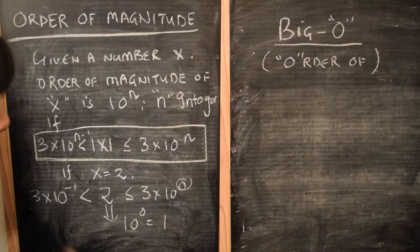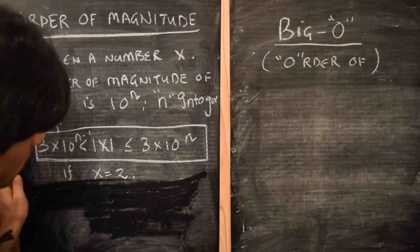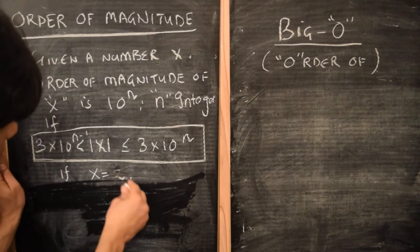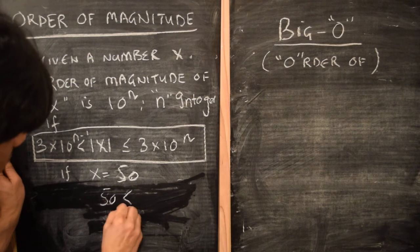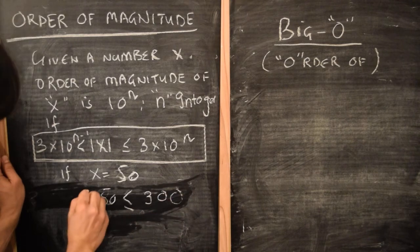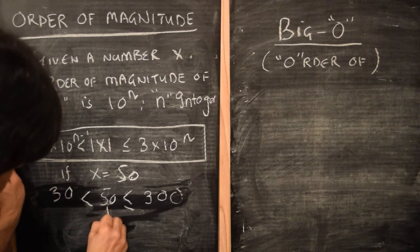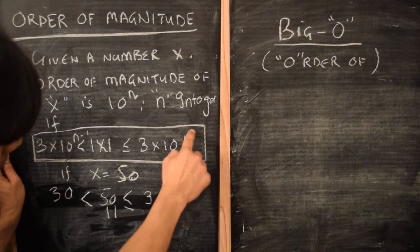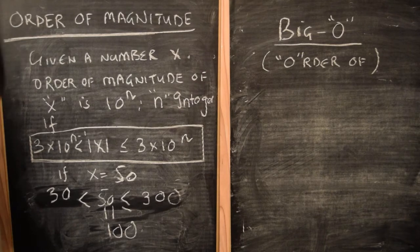So if we encounter the number 2, we could say its order of magnitude is 1. Let's try another example — say we have the number 50. Then 50 is less than or equal to 3 times 10 squared, which is 300, and greater than 3 times 10 to the power of 1, which is 30. So we can say that the order of magnitude of 50 is 10 squared, which is 100, since we used n equals 2. This is the general idea typically used to quantify the order of magnitude of a number.